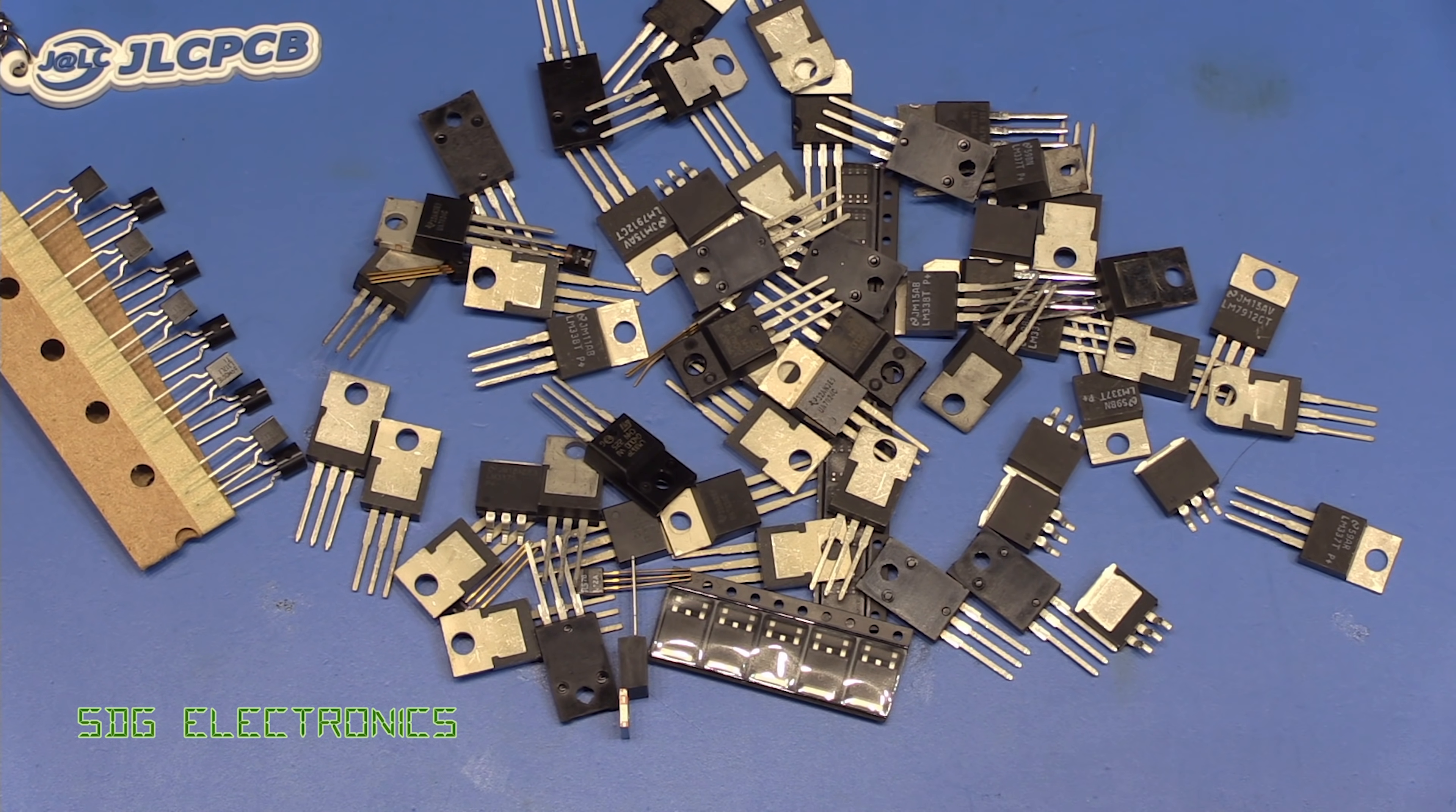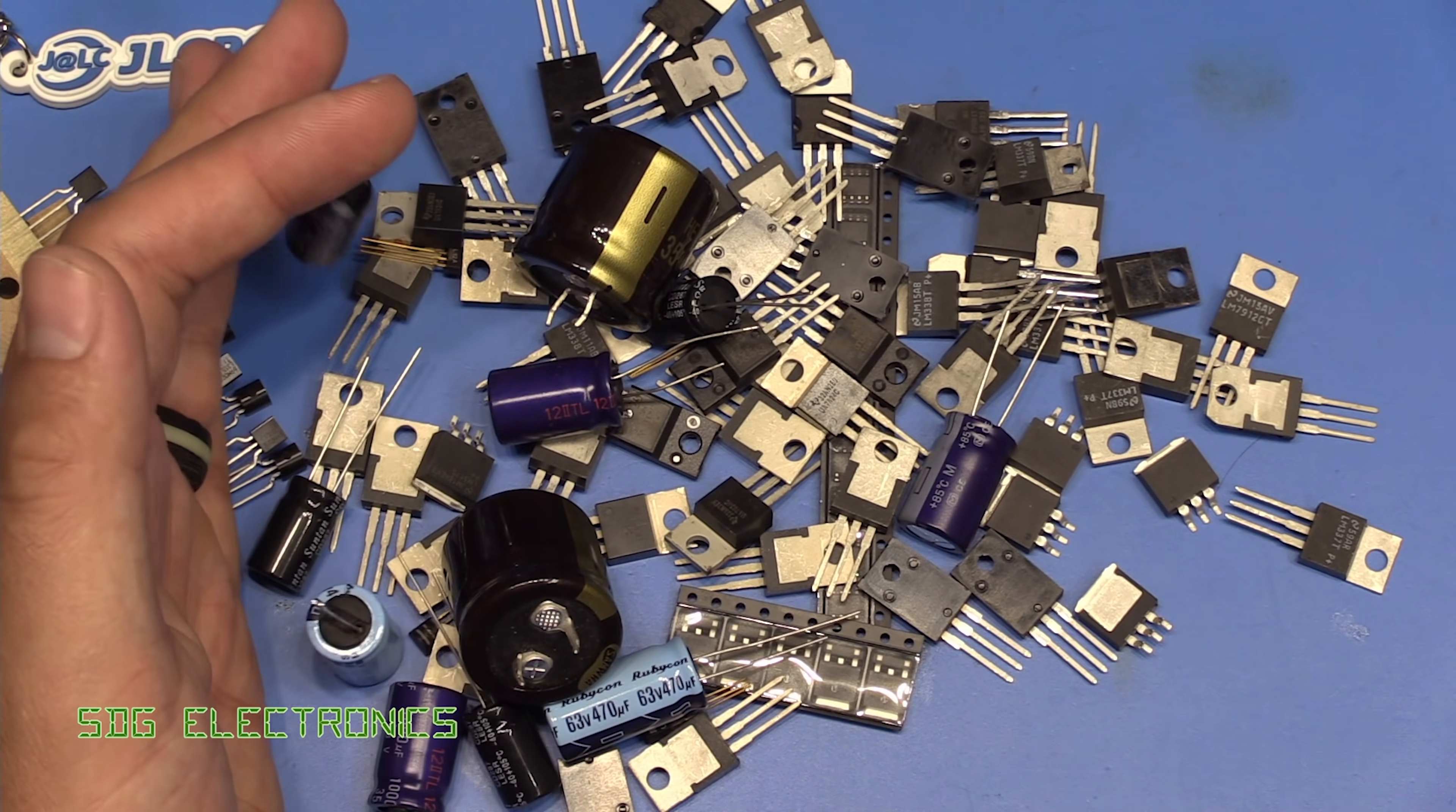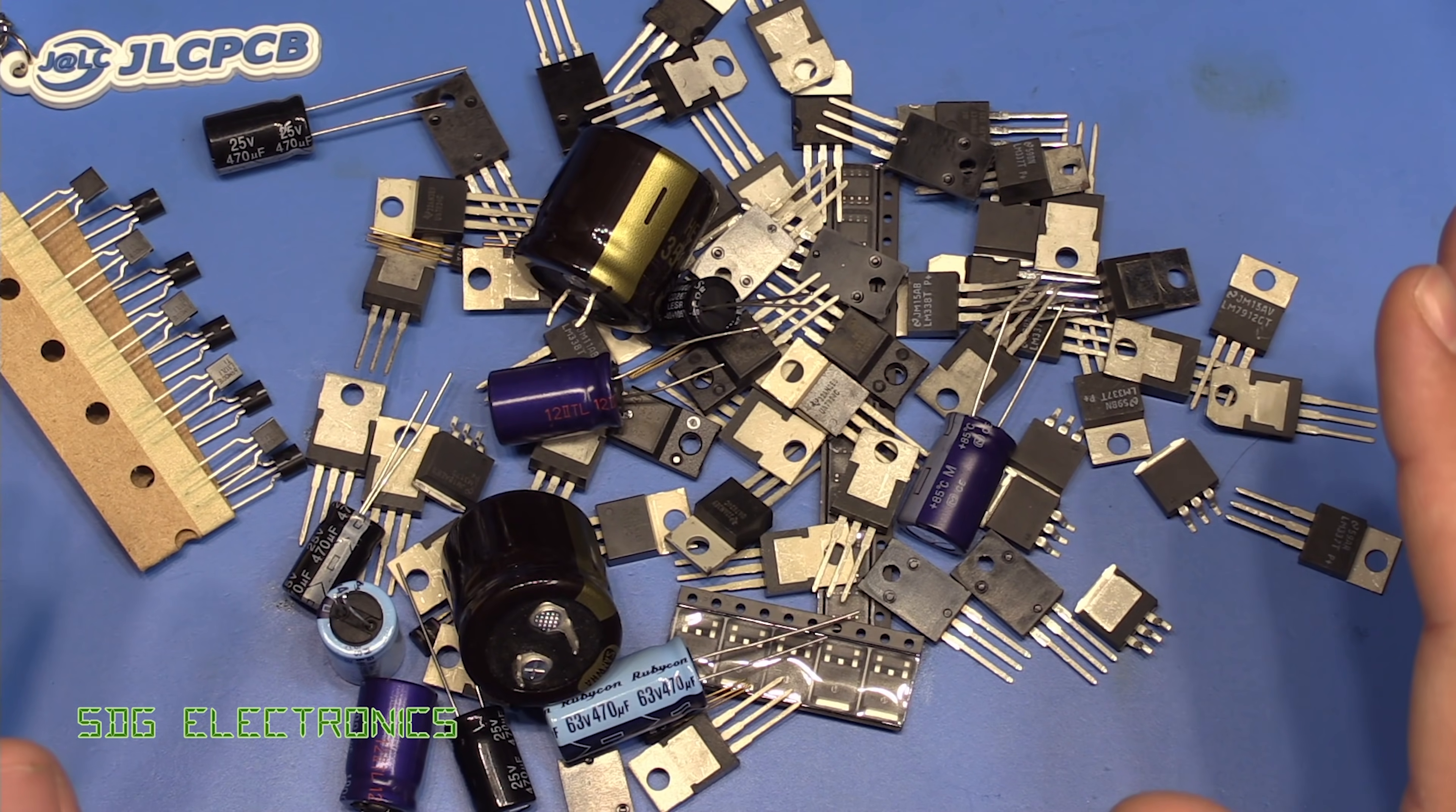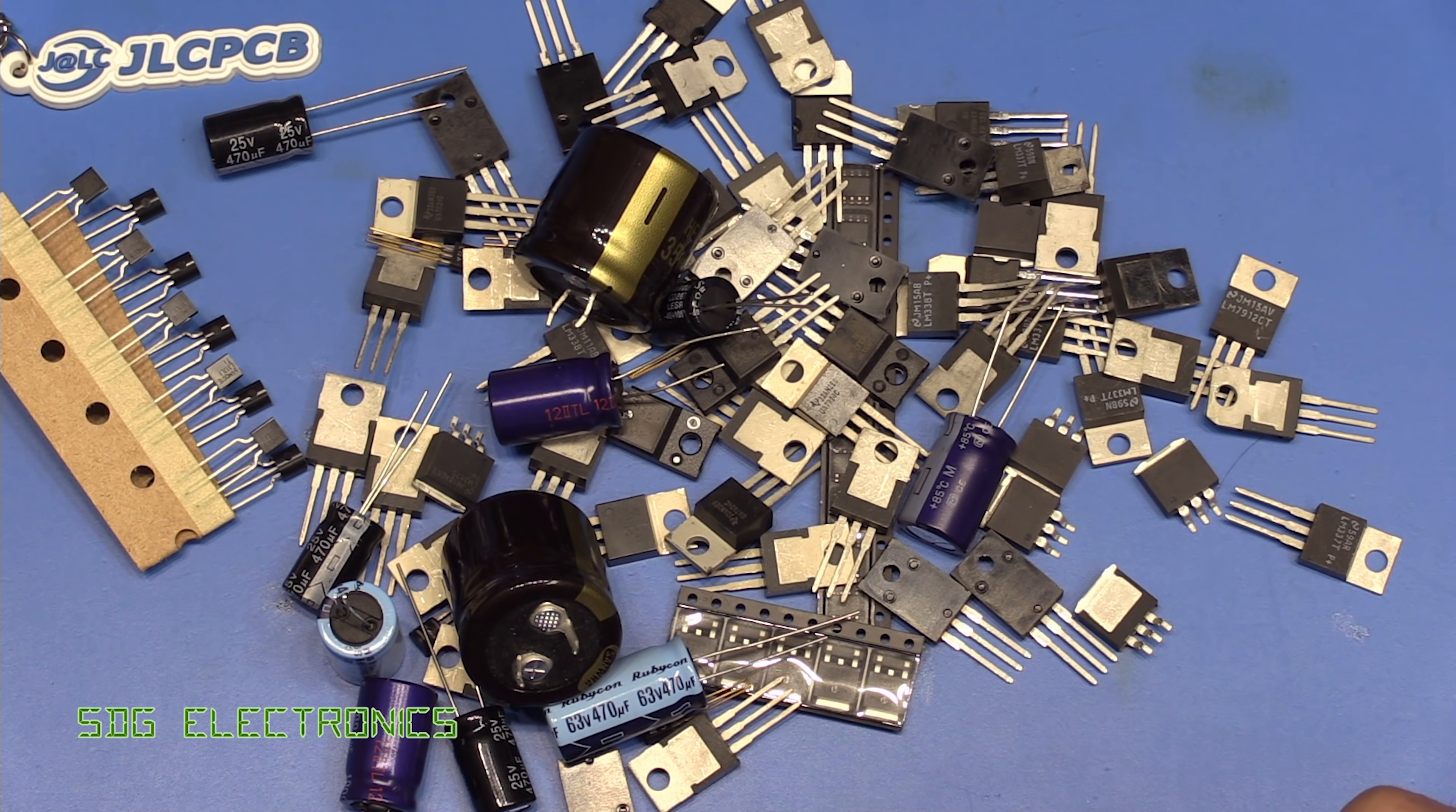There's a common misconception that if you just use some of the largest capacitors you can and just bank them up on the output, then you'll have a nice smooth voltage rail and you won't have any trouble. In fact, the reality couldn't be further from that misconception, and today we're going to discuss why.